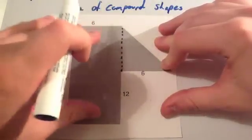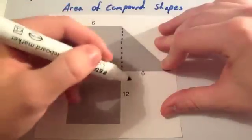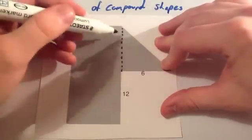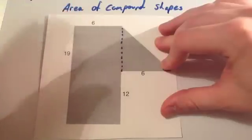So that's going to be quite easy to work out the area of that rectangle. The triangle on the other hand, I know the base of the triangle is 6, but I don't know the height of the triangle. But I can work it out.